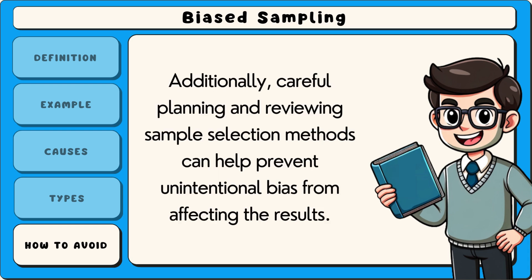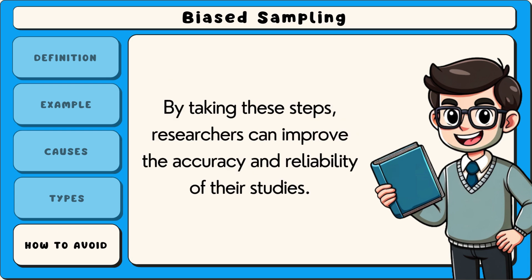Additionally, careful planning and reviewing sample selection methods can help prevent unintentional bias from affecting the results. By taking these steps, researchers can improve the accuracy and reliability of their studies.